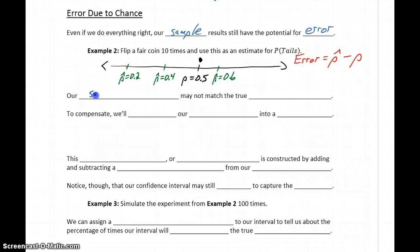So our sample results may not match the true population parameter. So in order to compensate for that, what we're going to do is stretch